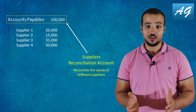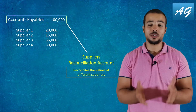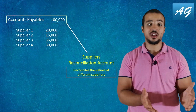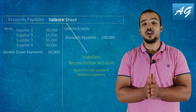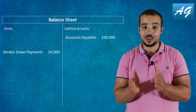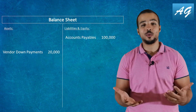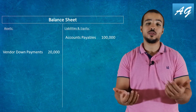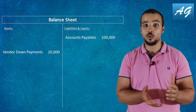Whenever we post a transaction to a supplier, it is also automatically posted to the reconciliation account assigned to the supplier. The total balance of the reconciliation account is reported in the balance sheet. One of the other accounts we have to report in the balance sheet is the vendor down payment account — the total amount we have already paid to the vendor without receiving any service or products in return. So how do we get to the balance of the vendor down payments account?